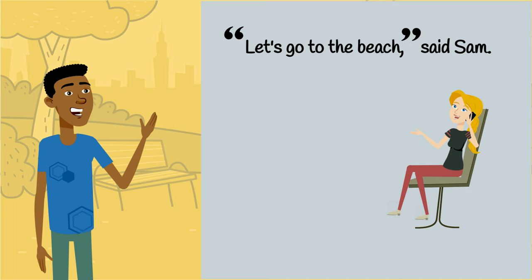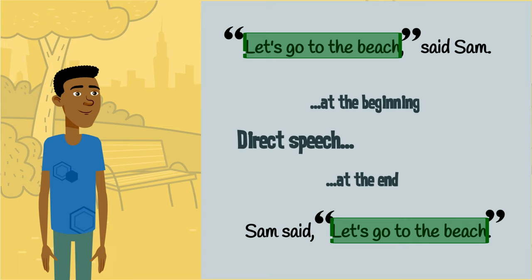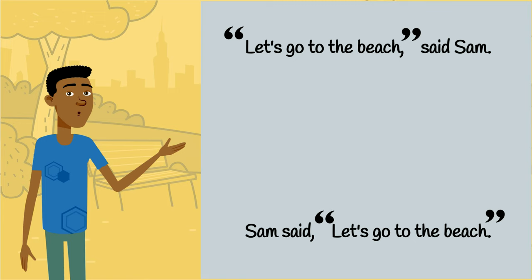Within a sentence, the direct speech can go at the beginning, like this, or it can go at the end, like this. Sam said, 'Let's go to the beach.' Notice that no matter which order, a comma separates the direct speech from the person talking.